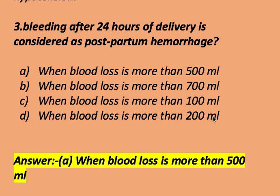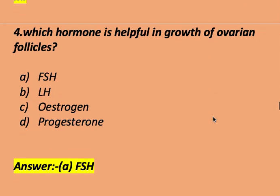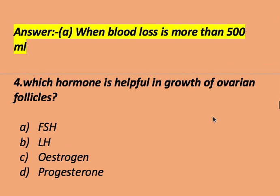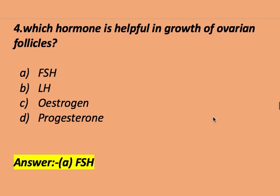Which hormone is helpful in the growth of ovarian follicles? Options: FSH, LH, estrogen, and progesterone. The right answer is FSH, meaning follicle-stimulating hormone. FSH is helpful in the growth of ovarian follicles.